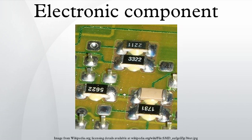An electronic component is any basic discrete device or physical entity in an electronic system used to affect electrons or their associated fields. Electronic components are mostly industrial products, available in a singular form and are not to be confused with electrical elements, which are conceptual abstractions representing idealized electronic components.